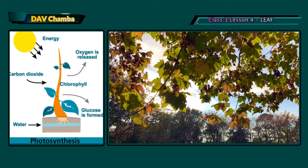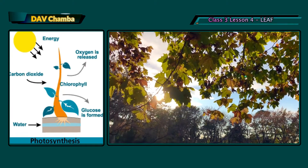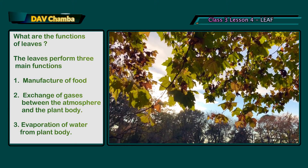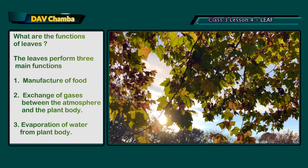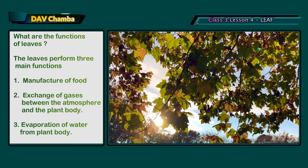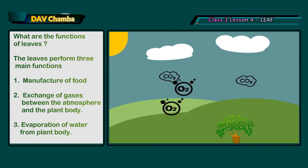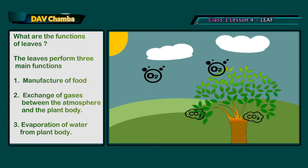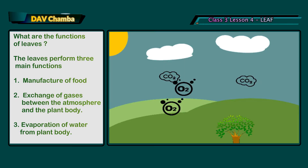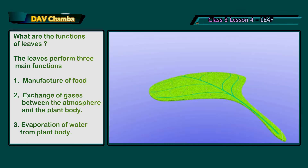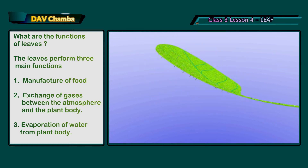The leaves perform three main functions: manufacture of food, exchange of gases between the atmosphere and the plant body, and evaporation of water from the plant body.